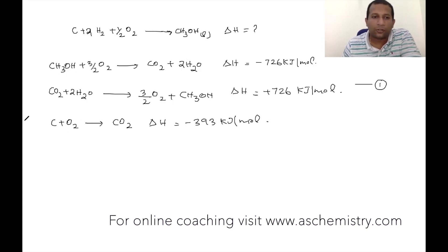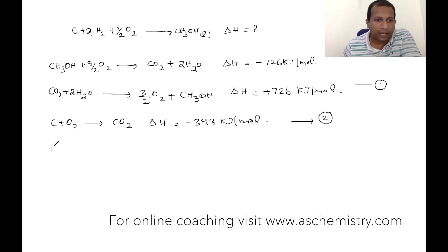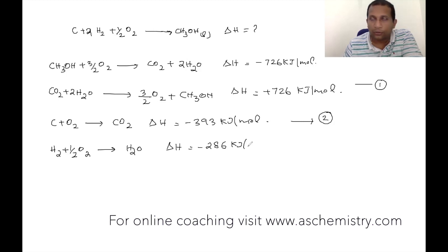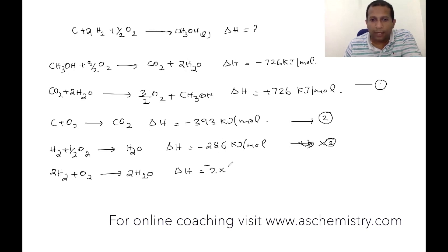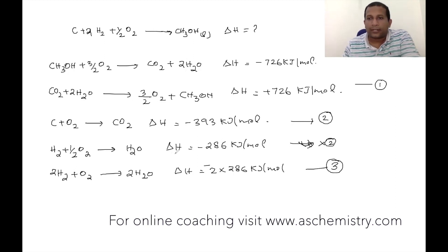This equation has carbon on the left side, so this is Equation 2. Equation 3 is: H2 + ½O2 → H2O, with ΔH = -286 kJ/mol. Since we need 2H2, we multiply by 2, so ΔH = 2 × (-286) kJ/mol. There are three equations: Equation 1 + Equation 2 + Equation 3.